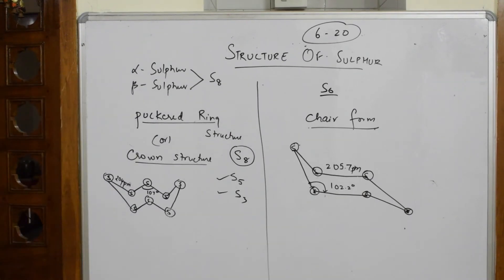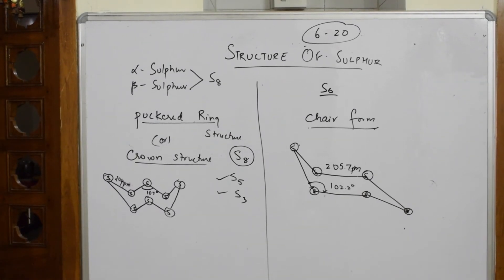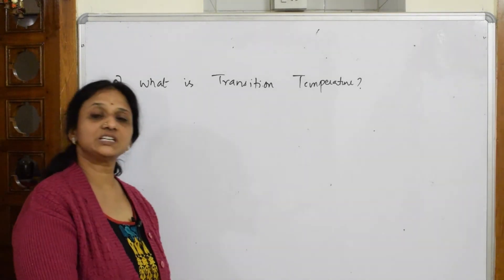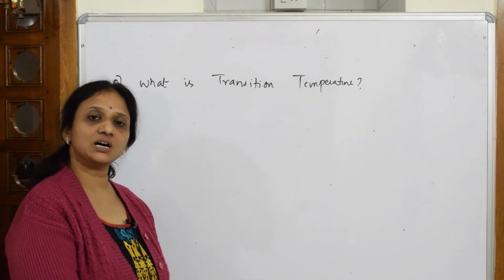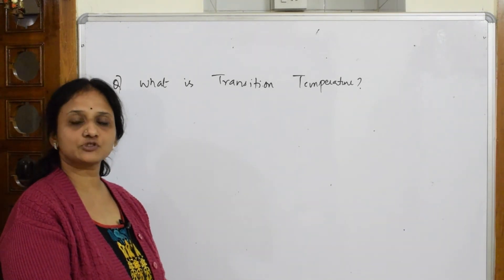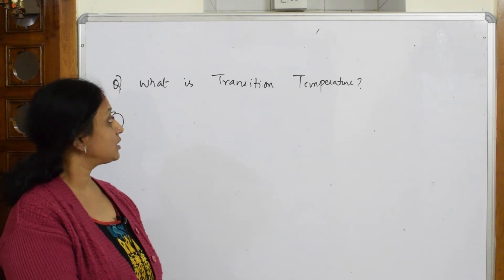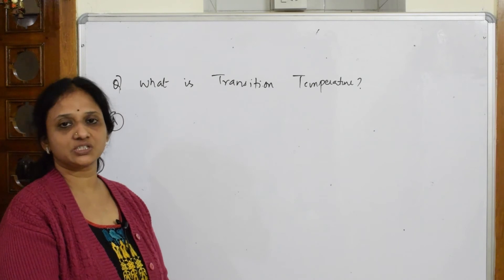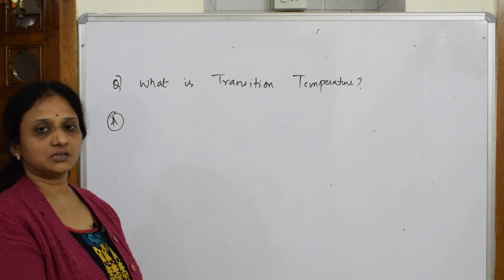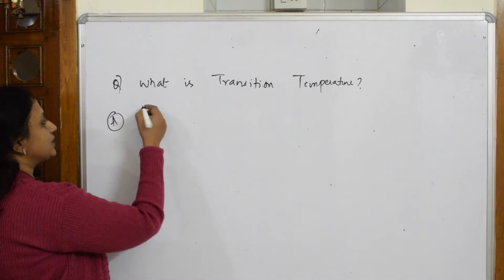We've seen the types, the differences between alpha sulfur and beta sulfur, then the structure of the puckered ring structure and crown structure. Now let's see this question: what is transition temperature?